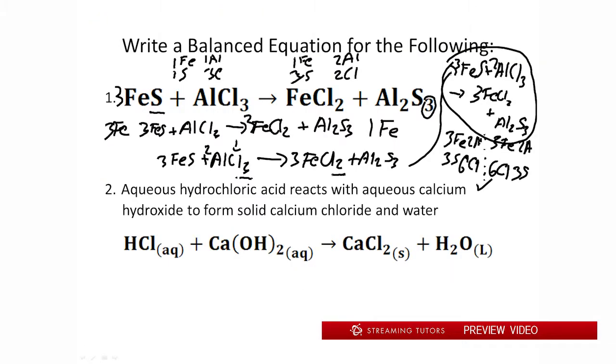So now let's balance this. So first thing off we see, we see that our chlorines are unbalanced. So we have two chlorine over here and one chlorine over here. So let's multiply HCl by two. So now we get 2HCl plus calcium hydroxide goes to calcium chloride plus H2O. Okay. So now our chlorines are balanced.